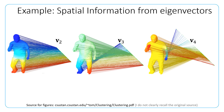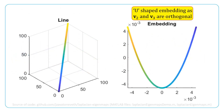This is how one-dimensional embeddings obtained using the next two eigenvectors v3 and v4 look like. This is how a straight line segment in three dimensions gets embedded in two dimensions. It must be noted that the embedding is U-shaped. This is because v2 and v3 are orthogonal and an embedding that is also a straight line segment is not possible, as v2 and v3 are not correlated.